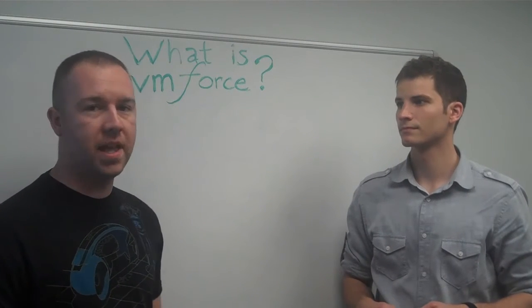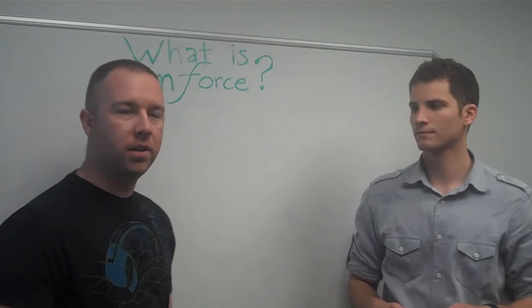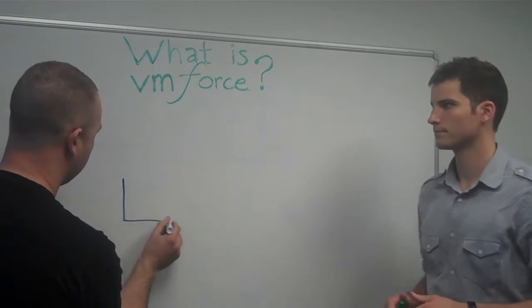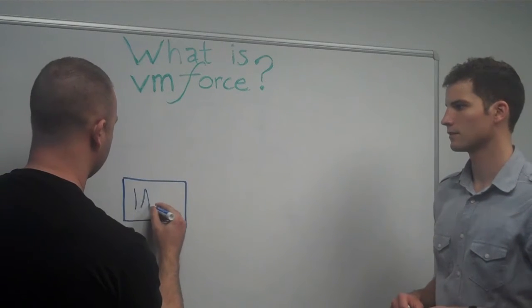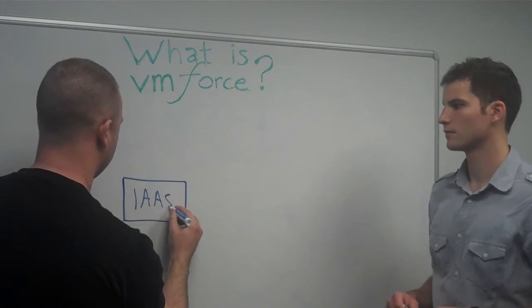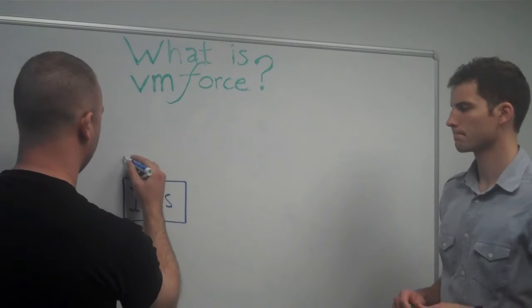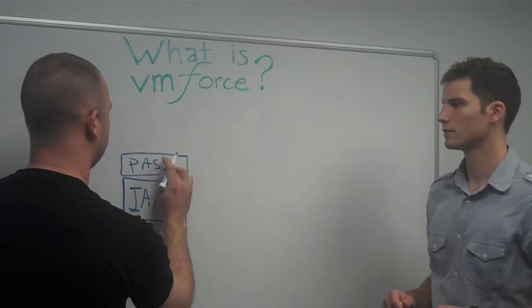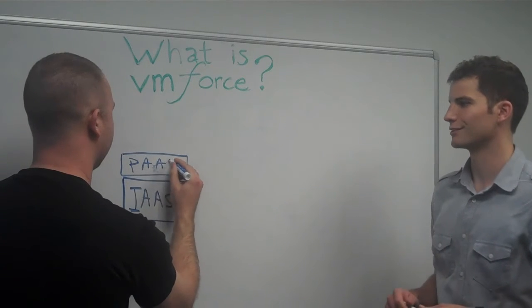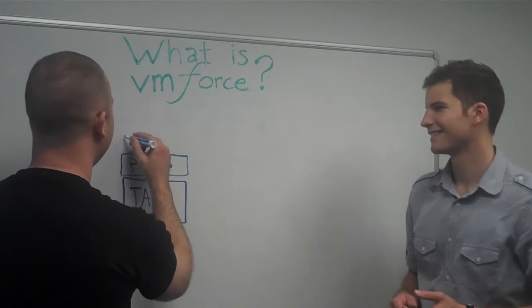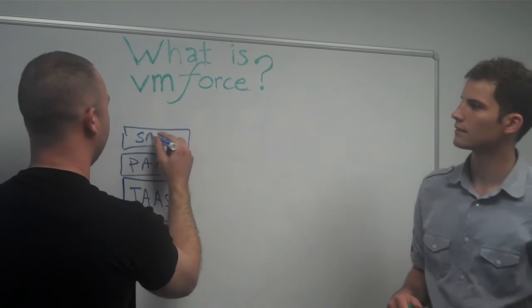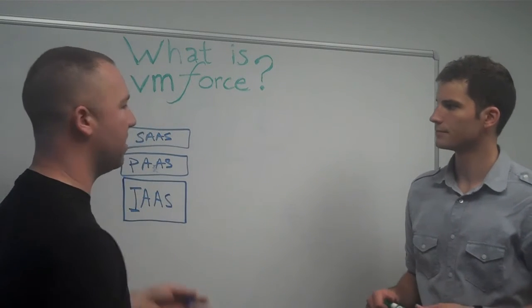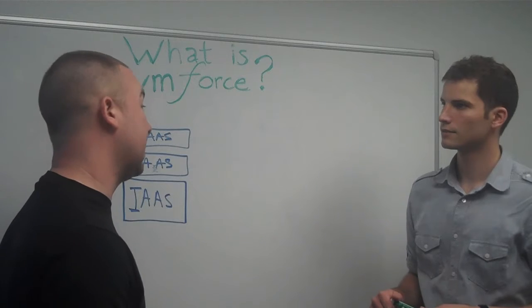So if we look at our normal kind of stack diagram, you've got infrastructure as a service, and then you've got your platform as a service. And then you may have seen from previous Whiteboard Wednesdays, our software as a service. So this is kind of the general cloud stack, I would call it.